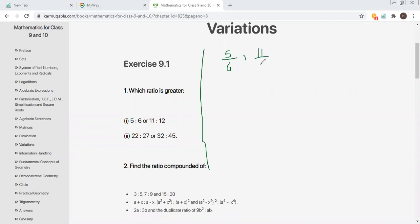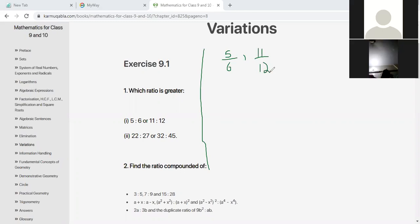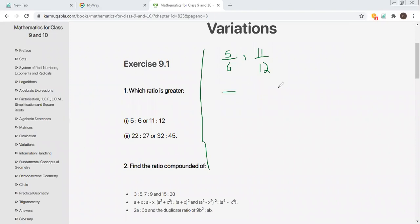To know which ratio is greater, we will write the ratio terms in fraction form and then take the LCM of 6 and 12. When we take the LCM of 6 and 12, the answer will be the LCM.